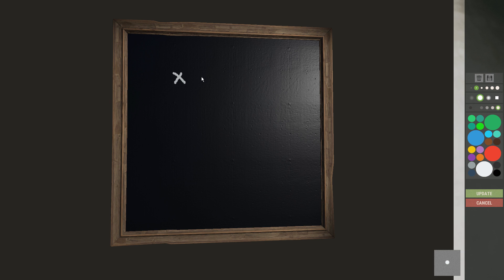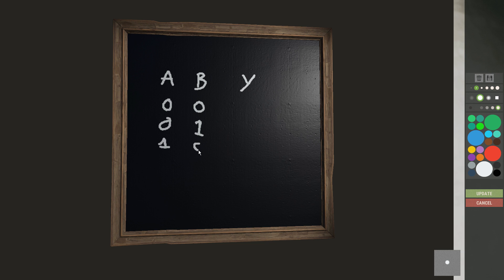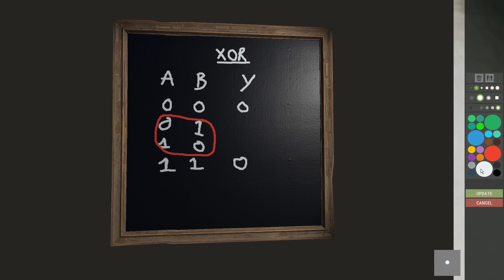The truth table for an XOR gate looks like this: A=0 B=0 → 0; A=0 B=1 → 1; A=1 B=0 → 1; A=1 B=1 → 0. Exclusive OR means the output is one only when the inputs differ — that's the exclusive bit.